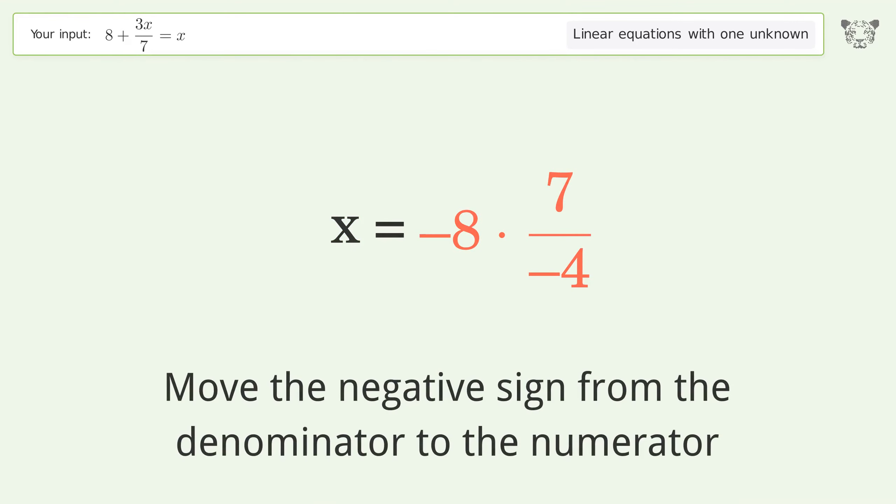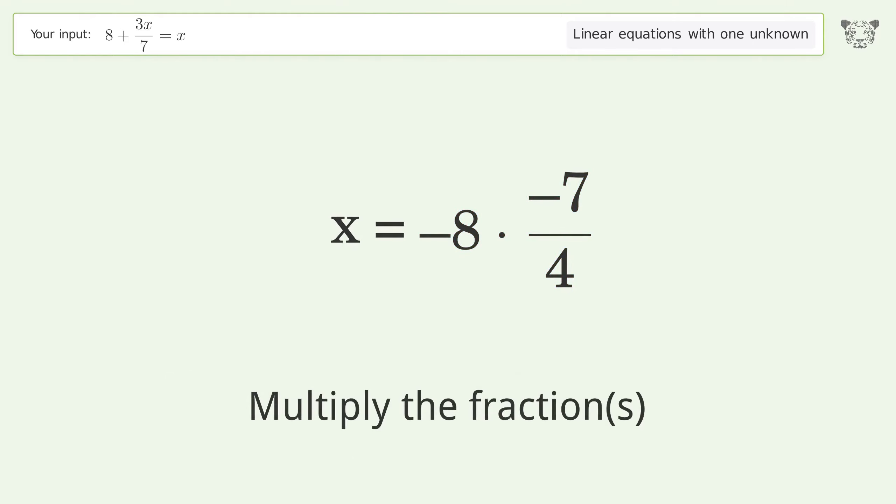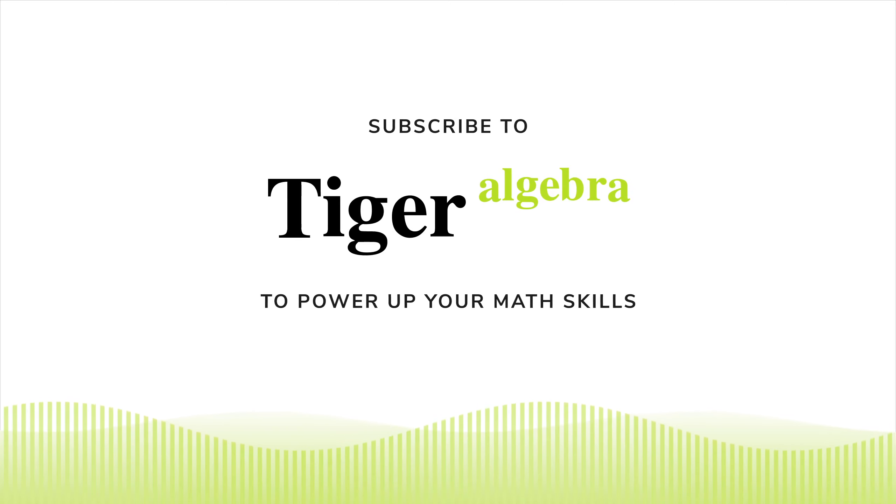Move the negative sign from the denominator to the numerator. Multiply the fractions. Simplify the arithmetic. And so the final result is x equals 14.